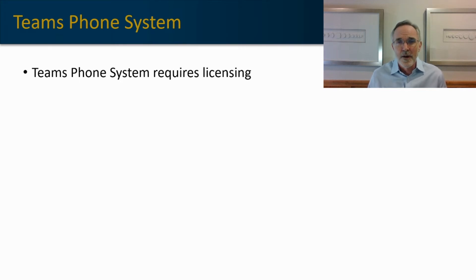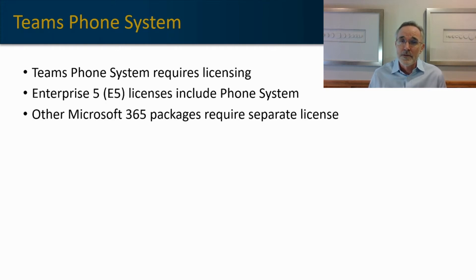Unless you're on an Enterprise 5 or E5 license, you're going to need to purchase a phone system license. Generally, phone system licenses are available on all the other Office 365 or Microsoft 365 packages, generally it's about $8 per user. Now these are current prices. By the time you watch this video, the prices may have changed, so make sure that you confirm the current pricing structure before you move forward.